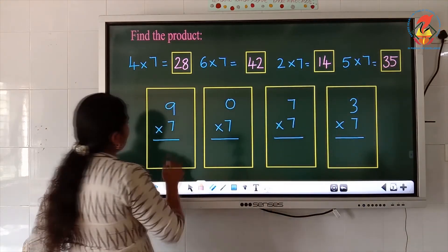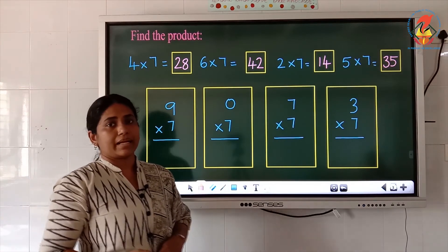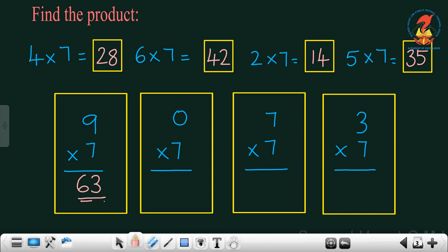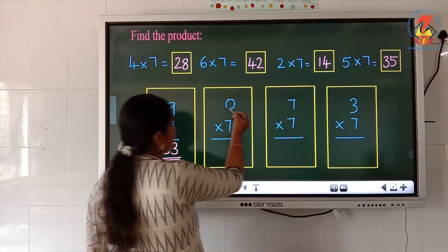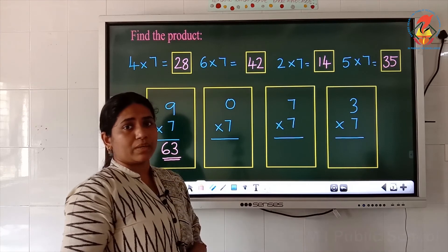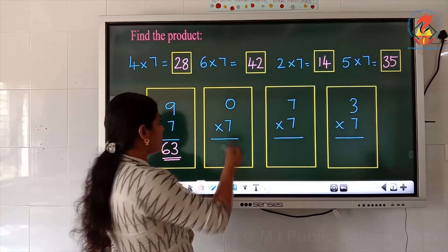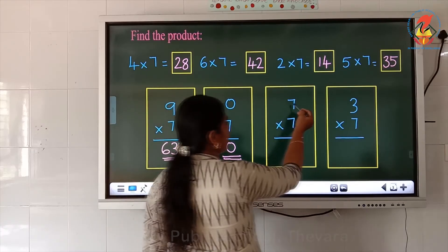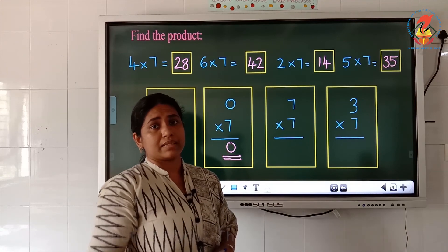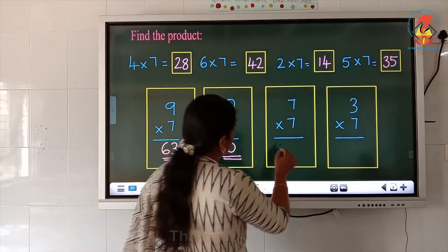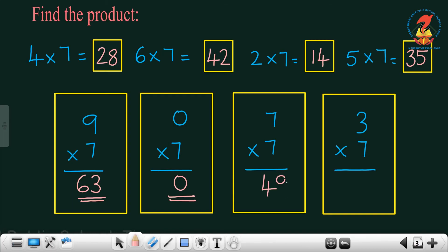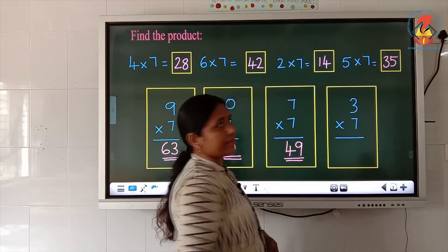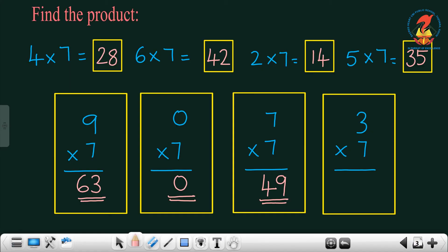Now 9 7's are — what is the answer? 9 times 7 is 63. Now here 0 into 7 — multiplying by 0. What is the property of multiplication? Multiplying by 0, the answer is always 0. Now 7 7's are — 7 7's are 49. Now the last and final question: 3 times 7 — 3 7's are 21.